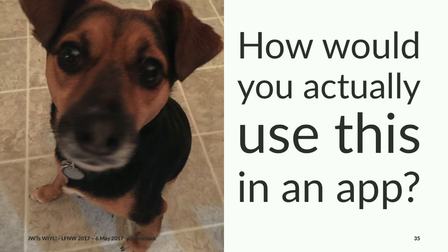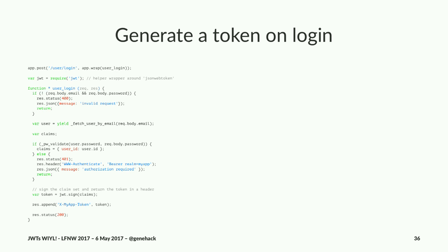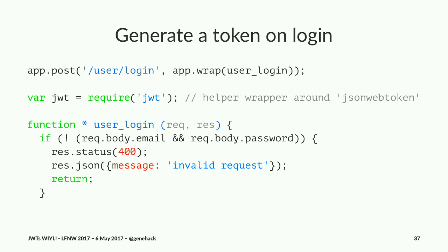Sammy was asking how this actually works in an app. This is the Node server-side code in JavaScript for generating a token after a successful login — not a whole lot of code, maybe a screen. This is from an Express app. First we generate a route — our user login route — and load up a JWT library, which is a wrapper around a useful NPM library called 'json-web-token.' Here's our function: a standard Express function taking a request and response object.